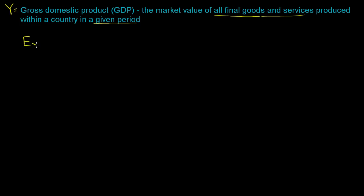So let's think about it from an expenditure point of view — to think about what are all the pieces. If we're thinking about expenditure, who are all of the players that might have spent money on final goods and services produced in our country?